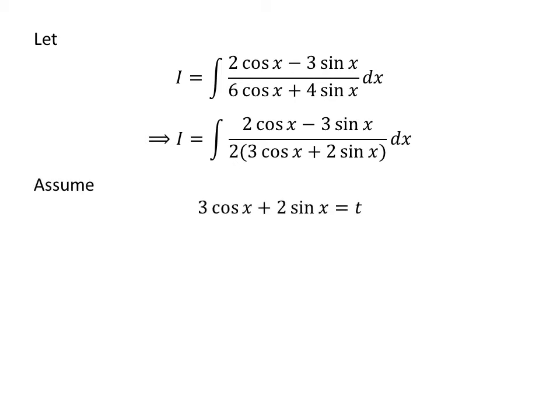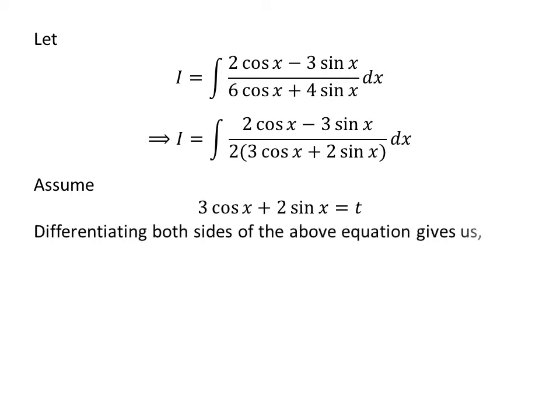Let us apply the substitution method to solve the integral. Assume 3 times cosine of x plus 2 times sine of x is equal to t. Taking the differential of both sides gives us the derivative of 3 times cosine of x plus 2 times sine of x with respect to x, times differential of x, is equal to differential of t.